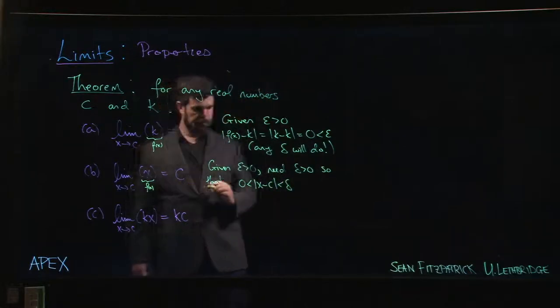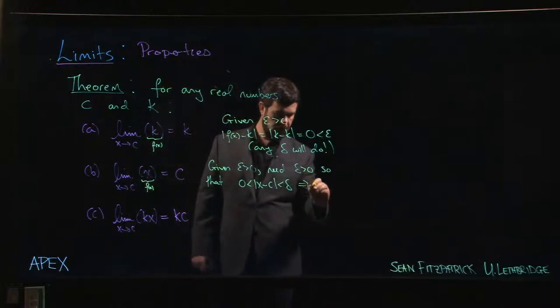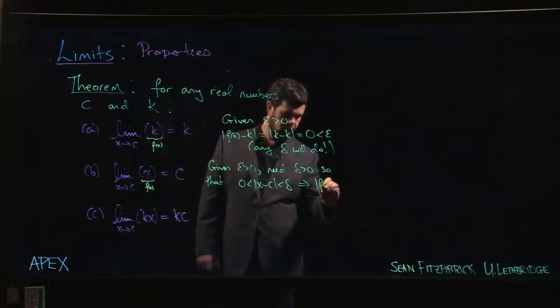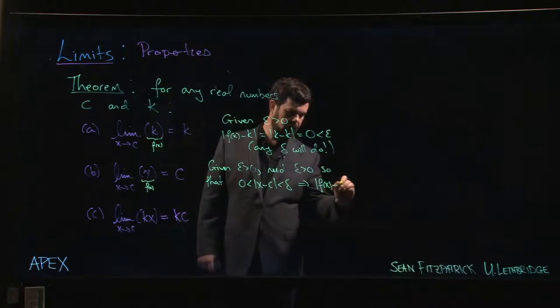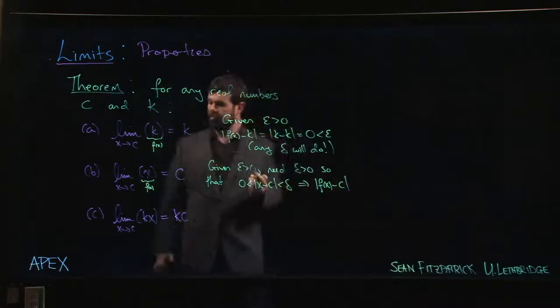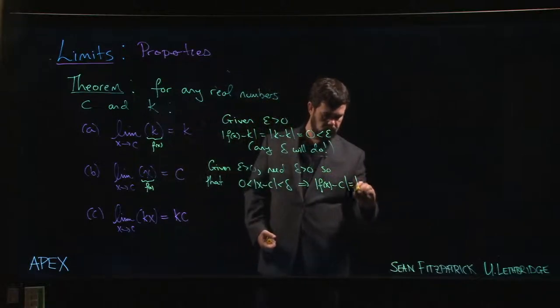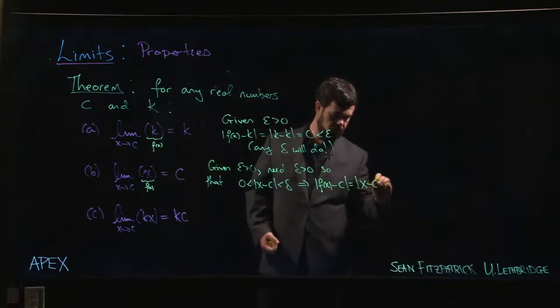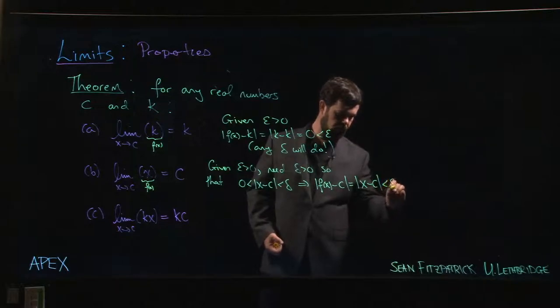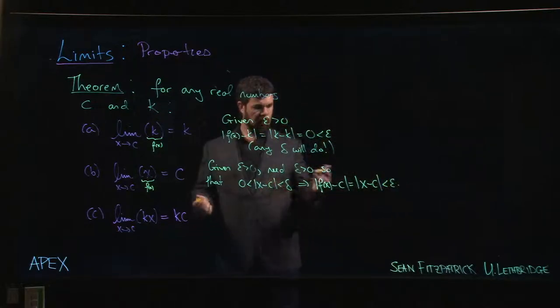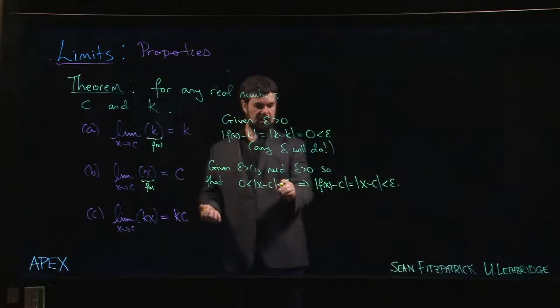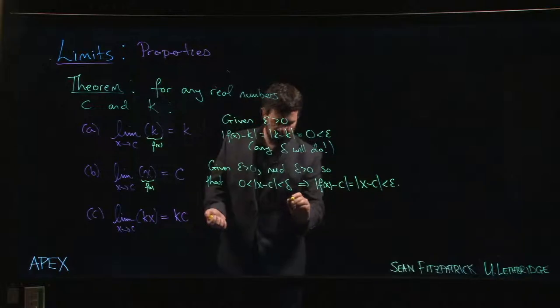Then f of x minus c, we want to show that's less than epsilon. But f of x is x, so we want that to be less than epsilon. So what should our delta be? Well, let's see, let's look at this.